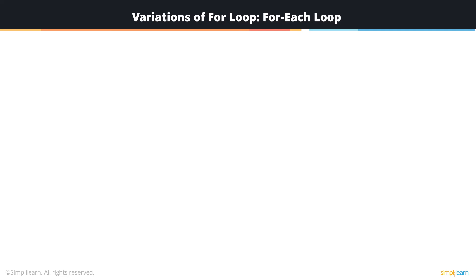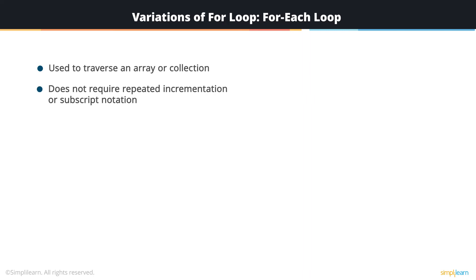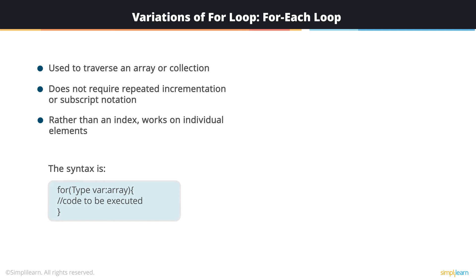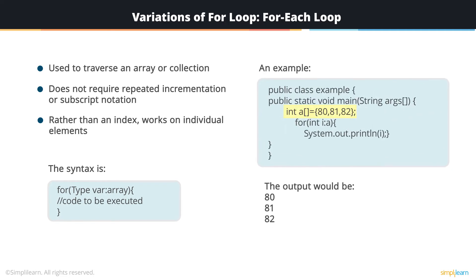Let's now consider the variations of a for loop. The for-each method is used to traverse an array or a collection. It is advantageous over a simple for loop as it doesn't require repeated incrementation or subscript notation — rather than an index, it works on individual elements. In this example, we choose an array 'a' with elements 80, 81, and 82, and using the for-each loop, we print items one after another as long as they belong to the specified loop.